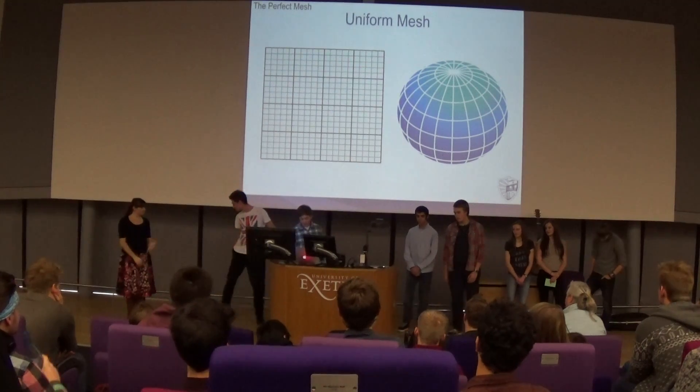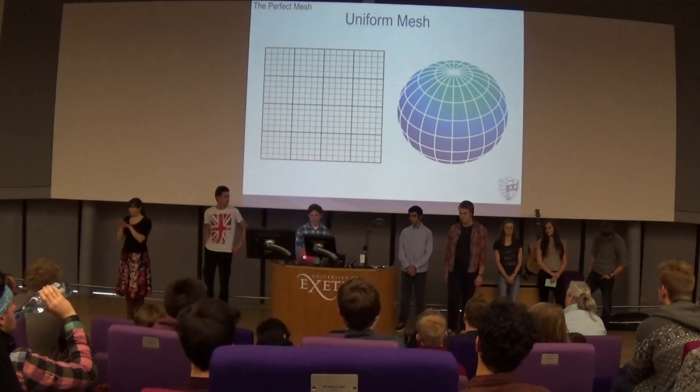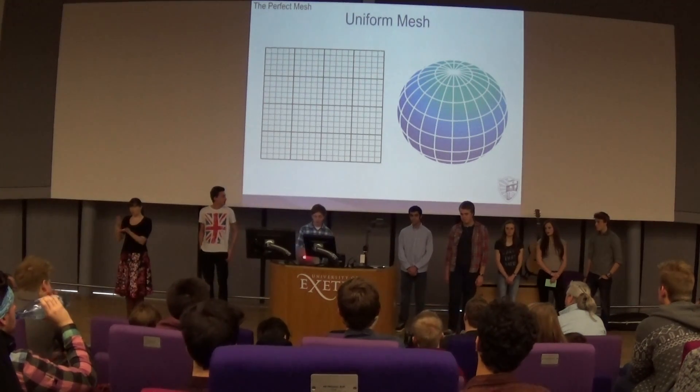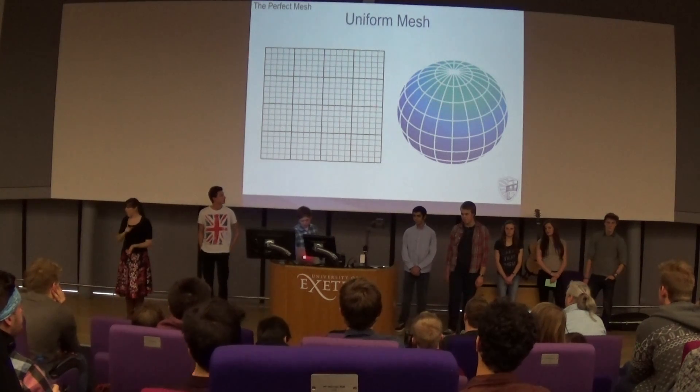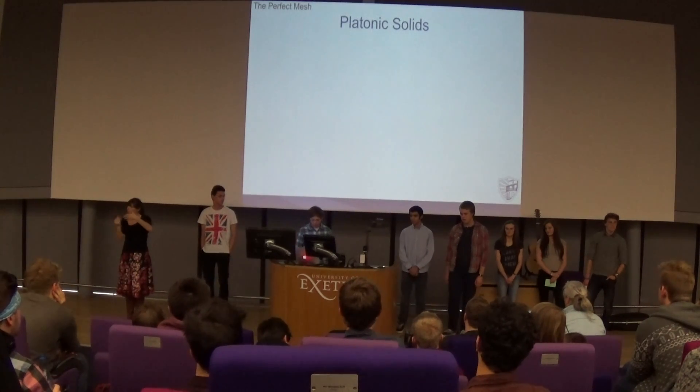To look at why finding a uniform mesh on the sphere is so complicated, we first need to look at why there are very few — only five in fact — perfect solutions to this problem.